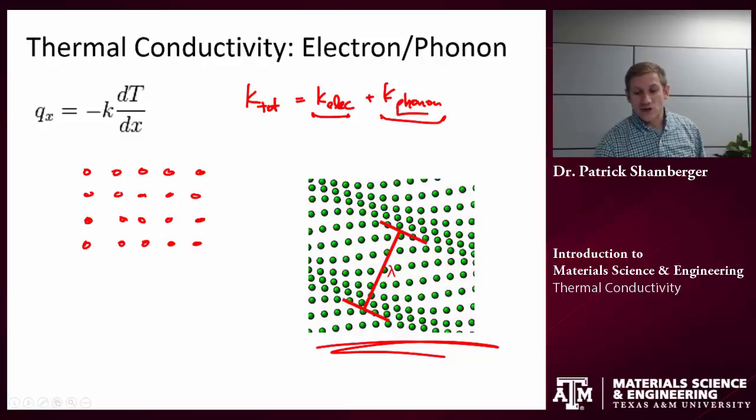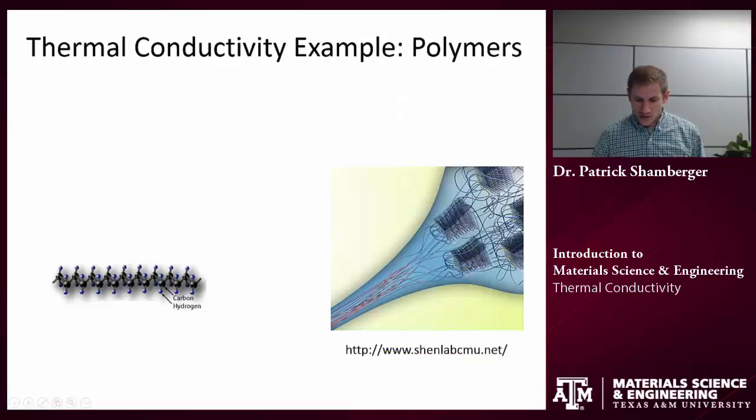Now the key thing here is that stiffer bonds tend to lead to higher phonon thermal conductivity. So if we think about something like that diamond example at the very beginning, even though the electronic contribution to thermal conductivity is quite small, there's a large phononic contribution.